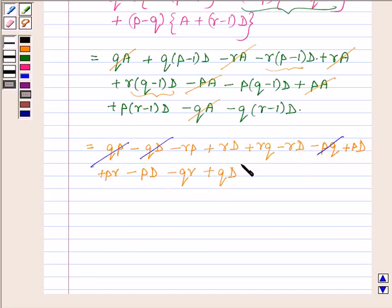Now qp cancels out with minus qp, minus qD with plus qD, minus rp with plus rp, rD with minus rD, rq with minus rq and pD with minus pD. This is equal to 0 which is the right hand side.